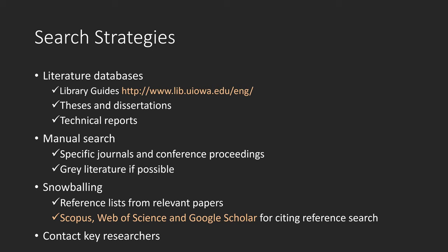How many and what databases do you need to search? It really depends on your research question. I would say at least three databases. It's always a good idea to search for theses, dissertations, and technical reports. If specific journals or conference proceedings are not well indexed by databases, or you are looking for book chapters or any other formats, you may have to perform manual searching.